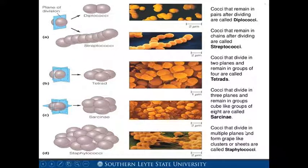In letter B, we have tetrad — cocci that divide in two planes and remain in groups of four are called tetrad. In letter C, we have sarcinae — cocci that divide in three planes and remain in cube-like groups of eight are called sarcinae. In letter D, staphylococci — cocci that divide in multiple planes and form grape-like clusters or sheets are called staphylococci.